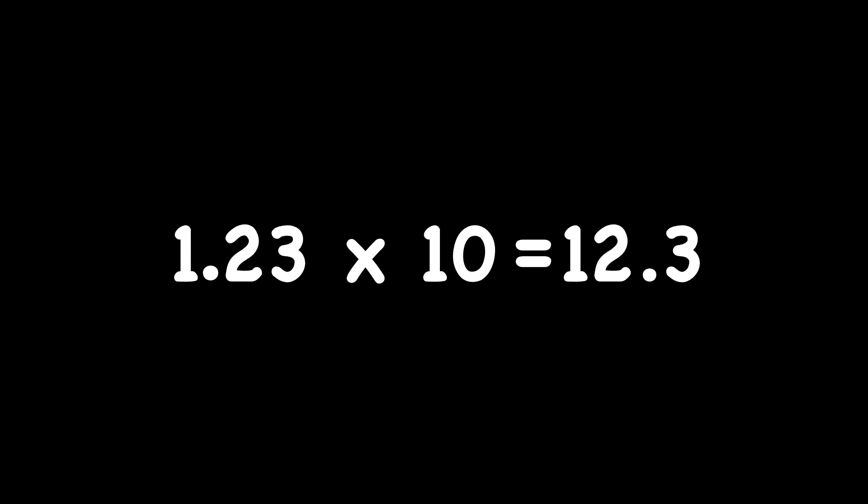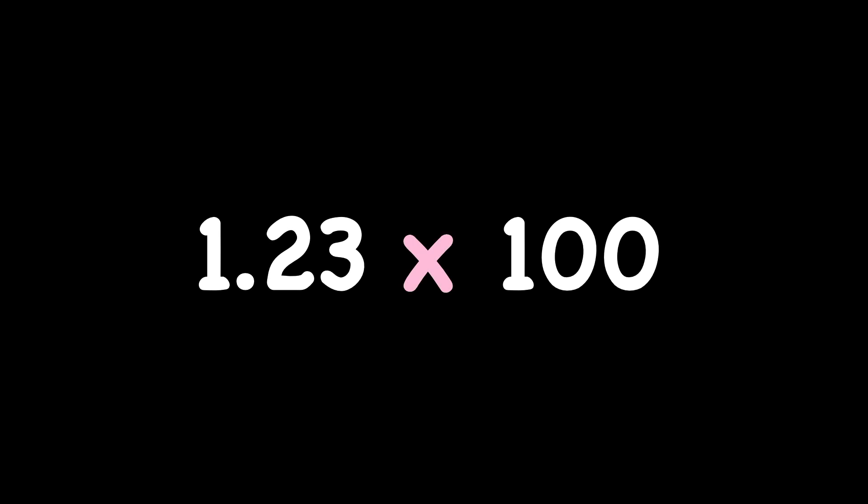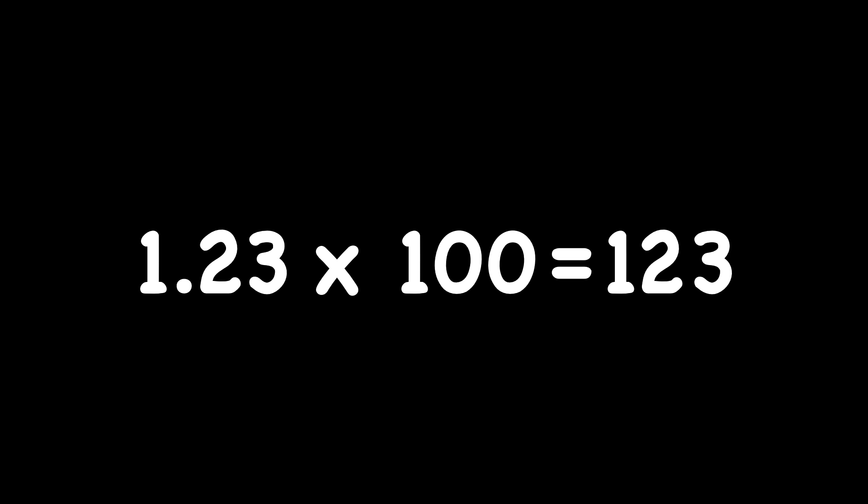And the same thing with division — you're just moving it the other way. Let's see what comes up next. So I see we're multiplying, so I'm going to move my decimal point to the right. Multiplying by a hundred, I'm going to move it two places to the right. So there's one, two. My answer is one hundred twenty-three. One point two three times one hundred is one hundred twenty-three. All I had to do was move my decimal point to the right two places, because I was multiplying by one hundred.